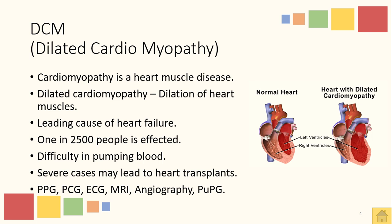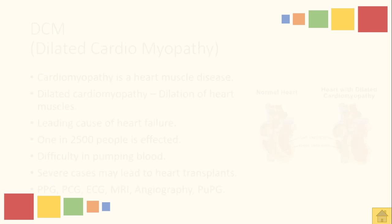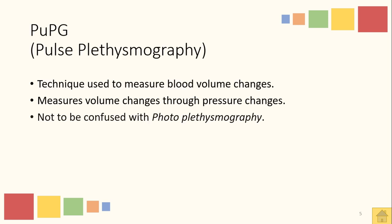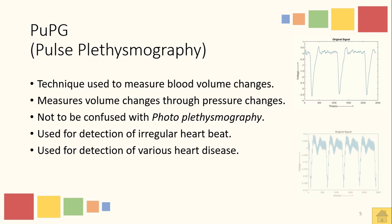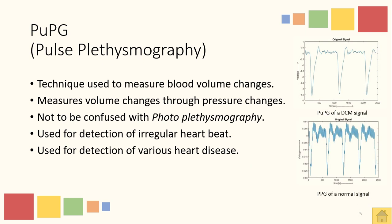The sensor technologies used for the detection of dilated cardiomyopathy include PPG, PCG, ECG, MRI, angiography, and pulse plethysmography. Pulse plethysmography, or PulsePG, is the technique upon which our whole study revolves. It stands for pulse plethysmography, a technique used for the detection of heart impulses based on volumetric changes. There is a clear difference between PPG (photoplethysmography), which is based on photonic signals, and pulse plethysmography, which is based upon blood volume changes.